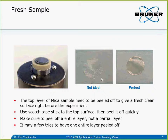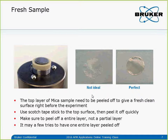When we land the probe we don't know if it's in the clean area or the contaminated area. If it's in the contaminated area, the tip will be contaminated immediately and we cannot get atomic resolution. That's why if this happens, I peel off a few more times until I get a good complete peel.